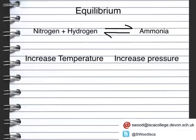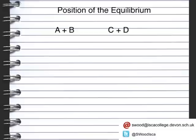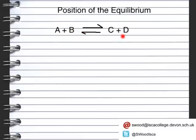We do actually increase the temperature in order to increase the rate of the forward reaction. When you have an equilibrium such as A plus B reacting to form C plus D, and C plus D reacting to form A plus B, the amount of A plus B forming C plus D is the same as the amount of C plus D reacting to form A plus B.